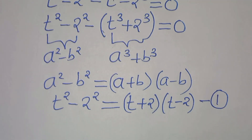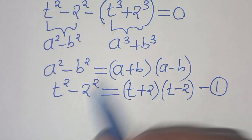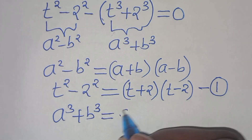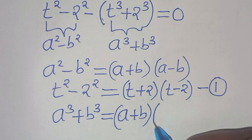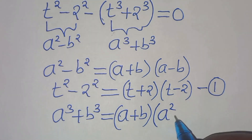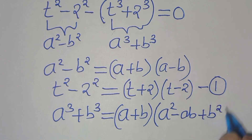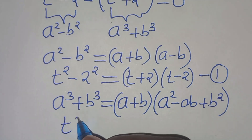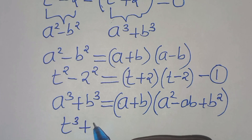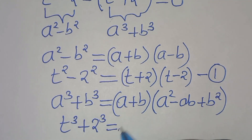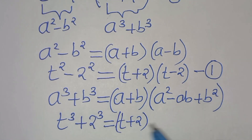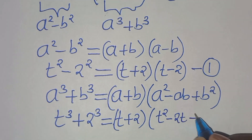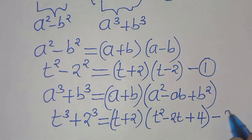The second part is a to the power of 3 plus b to the power of 3, the sum of two cubes. This can be expressed as a plus b times a squared minus ab plus b squared. Applying this identity, t cubed plus 2 cubed equals t plus 2 times t squared minus 2t plus 4. Let's call this equation 2.